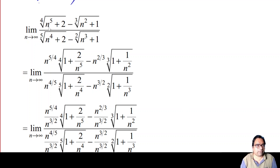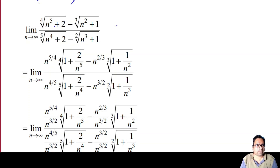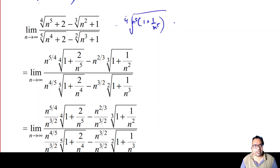For example, in n^5, if we take n common, we can write it as n^5 times (1 + 2/n^5). This is the fourth root of n^5. If we bring n outside, it becomes n^(5/4) times the fourth root of (1 + 2/n^5). So n^5 brought outside of a fourth root becomes n^(5/4).